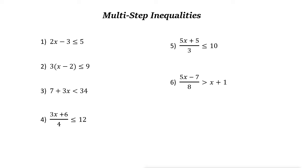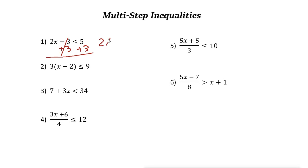Let's take a look at some examples. The first one says 2x minus 3 less than or equal to 5. The variable is on one side of the inequality, so we keep it there. We need to isolate this variable by adding or subtracting. Here we have minus 3, so the inverse operation is plus 3. Addition is the inverse of subtraction, but do the same thing for both sides of the inequality. So 2x minus 3 plus 3 — these two cancel out — it just becomes 2x. The result becomes 2x less than or equal to 5 plus 3, which is 8.